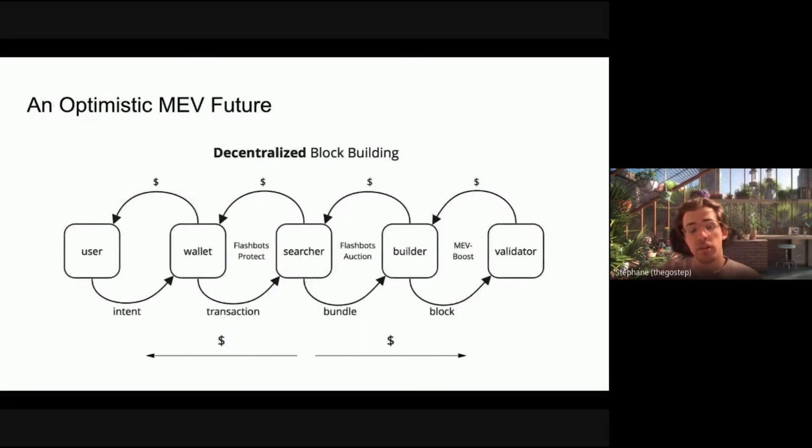So what does an optimistic future of MEV look like, right? What does the actual solution from MEV look like? And the way that we think about it is decentralized block building. So an ecosystem in the supply chain where all of the steps in this market are open and transparent. There's value flowing across the supply chain to the edges, right, where the users are. And there's open competition in each of these specialized verticals. So I'll leave you all with this as something to think about.